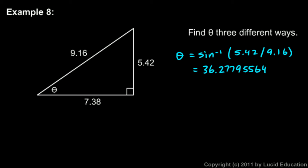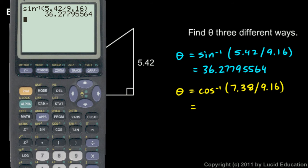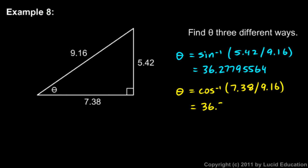Now watch what happens when we do the inverse cosine. We're going to find theta using the inverse cosine. So theta will be the inverse cosine of 7.38 divided by 9.16. And on the calculator, we should get the same answer. The inverse cosine of 7.38 divided by 9.16 gives 36.32432633. It's a little bit different — it didn't come out to be exactly the same.